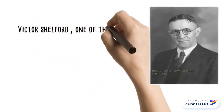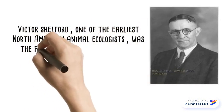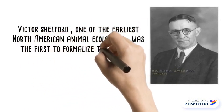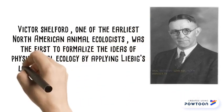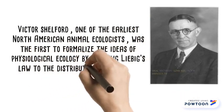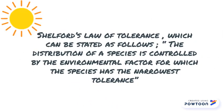Victor Shelford, one of the earliest North American animal ecologists, was the first to formalize the idea of physiology-ecology by applying Liebig's law to the distribution of species in natural communities. Shelford's Law of Tolerance can be stated as follows: the distribution of a species is controlled by the environmental factor for which the species has the narrowest tolerance.